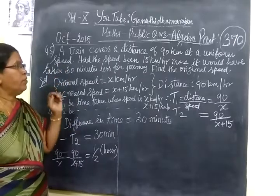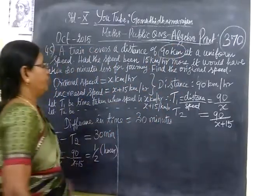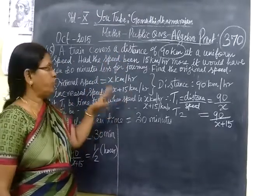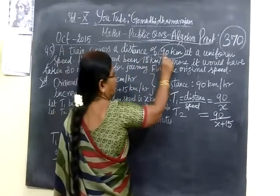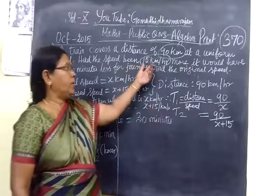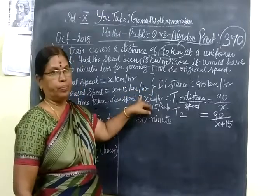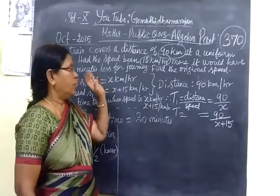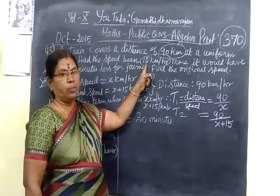The train covers a distance of 90 km at a uniform speed. The speed increases by 15 km per hour.